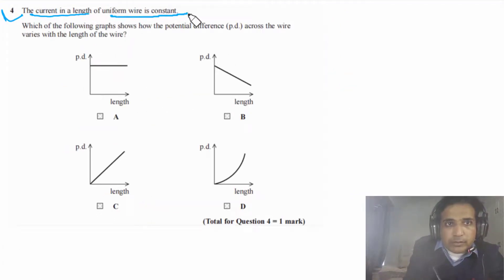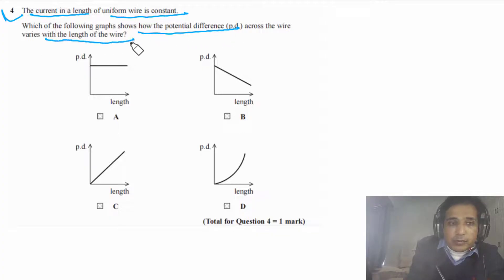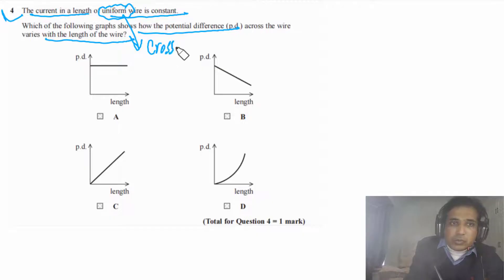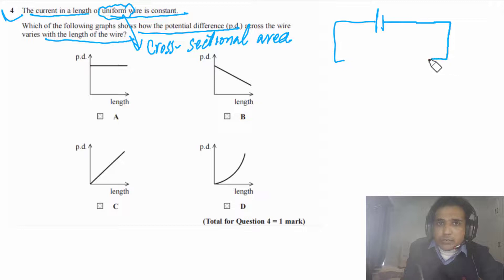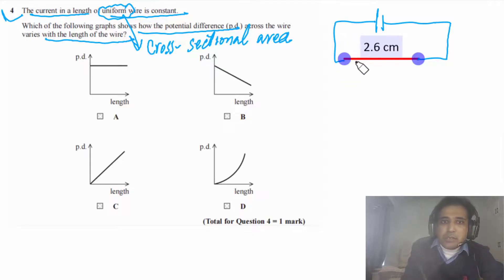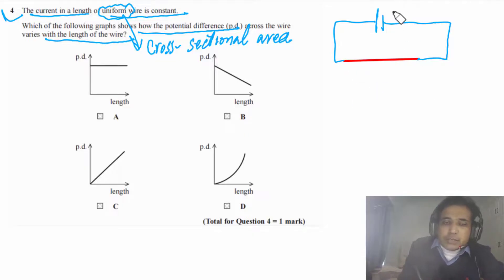Question 4 says: the current in a length of uniform wire is constant. Which of the following graphs shows how the potential difference across the wire varies with the length of the wire? It is given that it is a uniform wire, meaning the cross-sectional area is constant. We can draw a simple circuit with this wire.